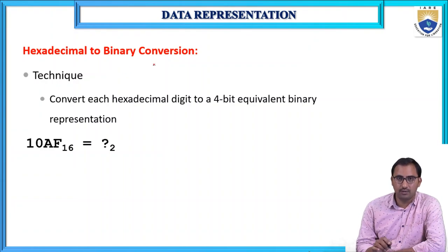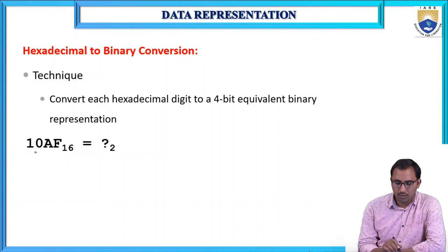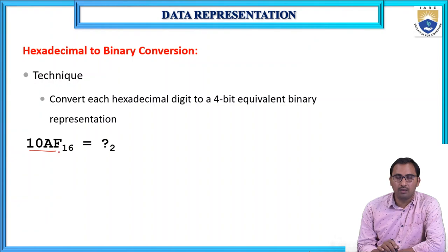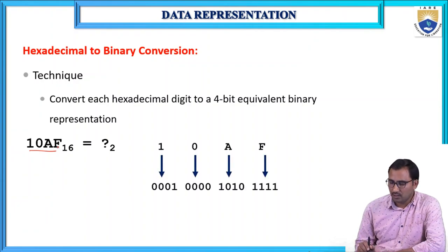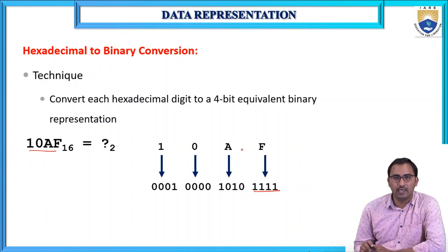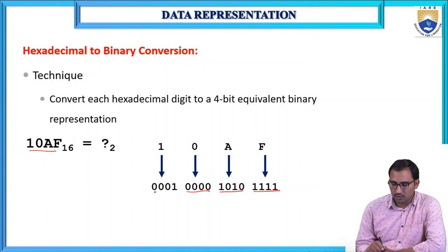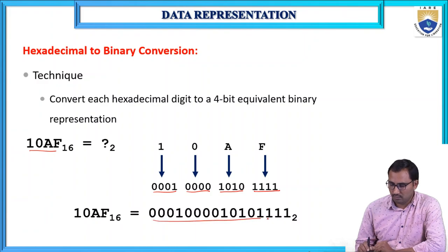For hexadecimal to binary conversion, the technique is to convert each hexadecimal digit into a 4-bit binary equivalent. For example, with hexadecimal number 10AF: F is represented as 1111 (four 1s), A (which is 10 in decimal) is represented as 1010, 0 is 0000, and 1 is 0001. This gives the corresponding binary number.